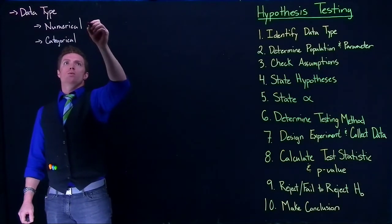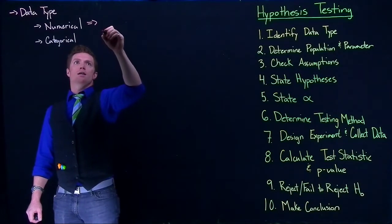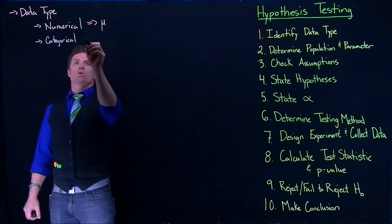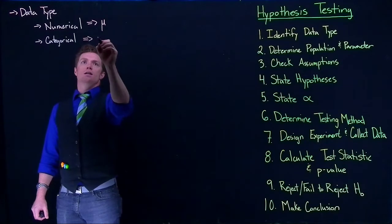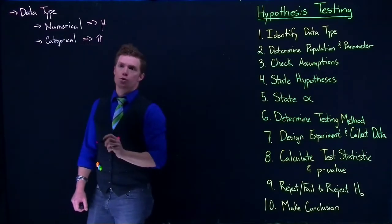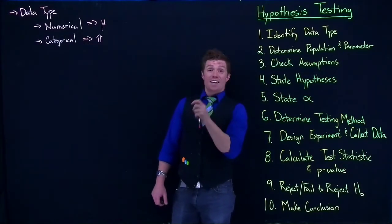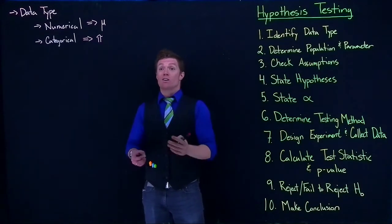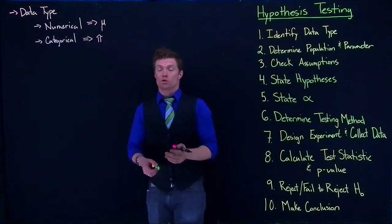Remember, if we're dealing with numerical, we are really interested in the mean, the true mean, and with categorical we're really interested in pi or the true proportion. If we can identify the data type, we can really narrow down our options or what we're trying to do.